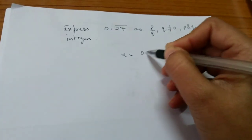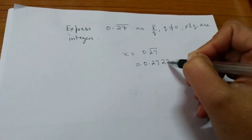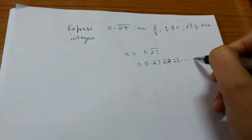Let x equal 0.27 bar, which is equal to 0.272727 and so on.